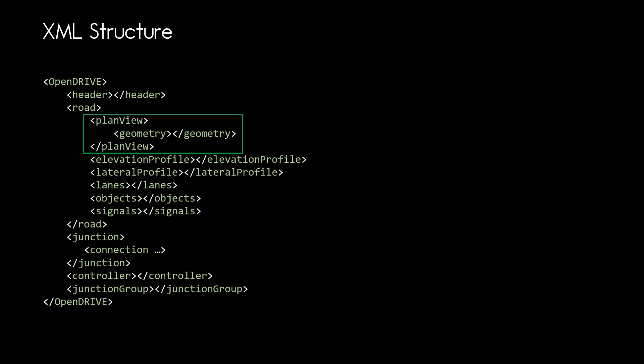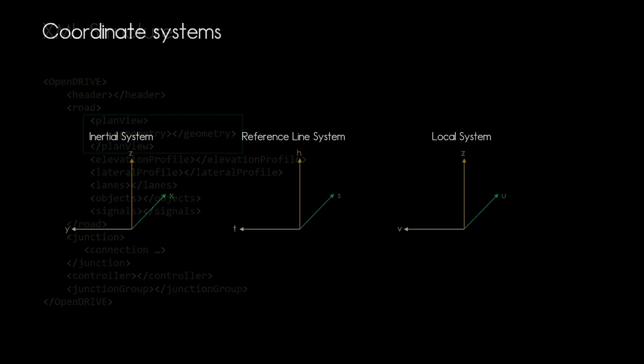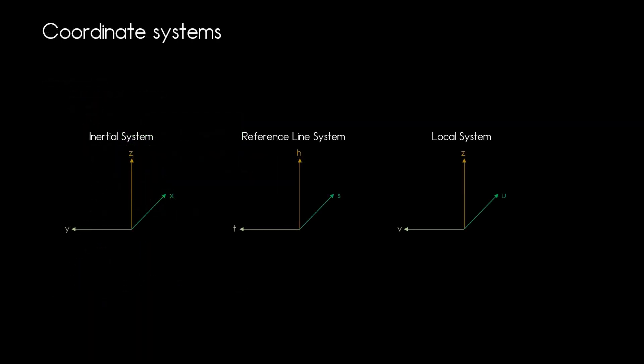Before we jump into details, let's quickly go through the coordinate systems OpenDrive works with. In OpenDrive we use three different coordinate systems: the inertial coordinate system, where everything lives — you could also call this the world system; then we have the reference line system, which is a Frenet coordinate system where your reference line defines the s-axis; and last but not least we have the local system, where we define objects which can then be placed in other systems with an insertion point.